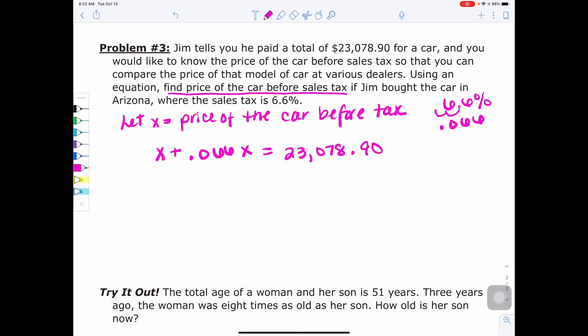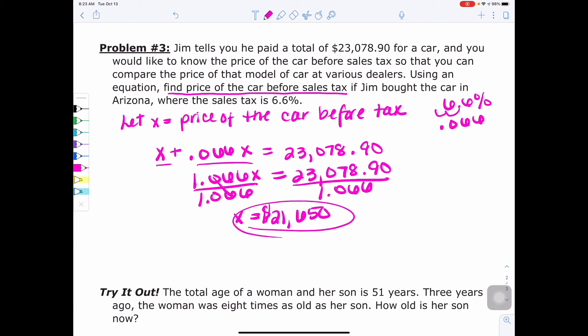So if we go through our steps, no distributive, but we do have like terms over here. So this becomes 1.066X equals $23,078.90. No variables on both sides, no addition or subtraction, but we do have multiplication we need to undo. So I'm going to divide both sides by 1.066. When I do that, I get a total of $21,650. So the price of the car before tax was $21,650.